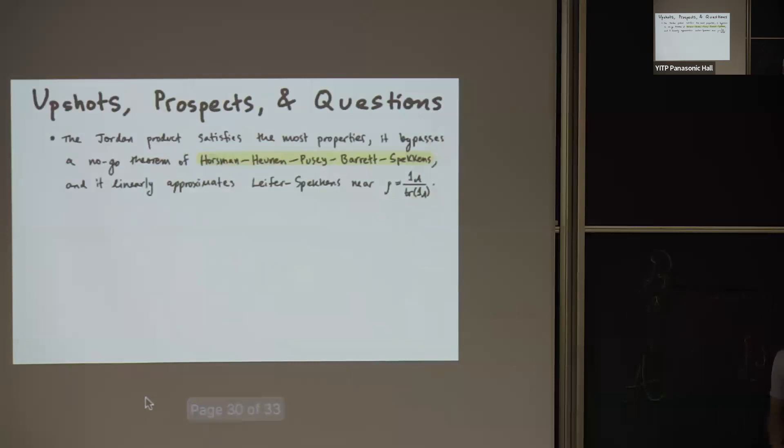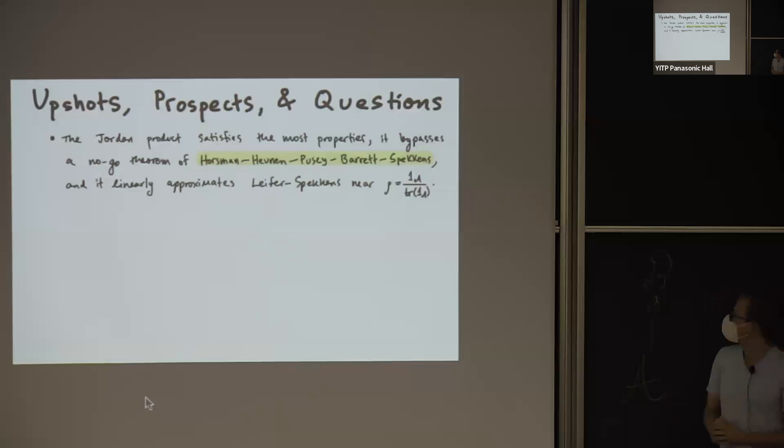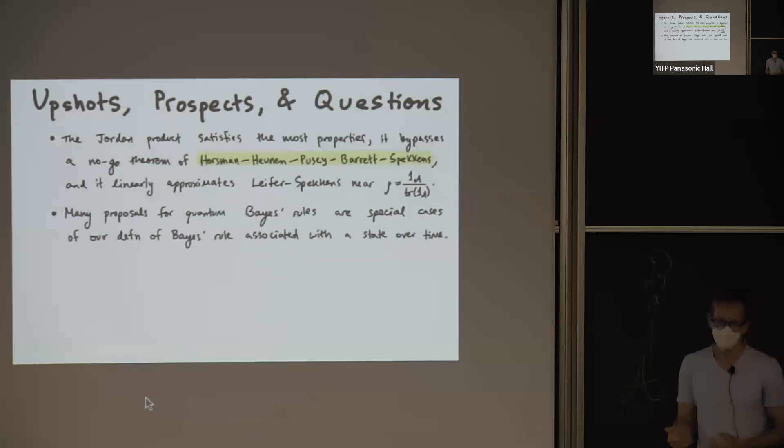So actually, this is more or less, it leads to the end. One of the important things about the Jordan product is that it satisfies the most properties out of the ones that I did not list, unfortunately. But it satisfies a lot of them and it bypasses a no-go theorem. That was interpreted as saying there are no good quantum states over time functions. But when we reinterpreted the theorem in our way, we found out that the Jordan product actually bypasses that. And it also provides a linear approximation to the Liefer-Speccan state over time. And I also want to point out that many proposals for quantum Bayes rules in the literature are actually special cases of this definition, including Christopher Fuchs's Bayesian updating Bayes rule.